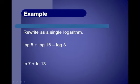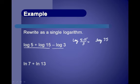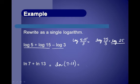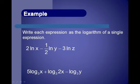Now let's go the other way — rewrite as a single log. For log(5) + log(15) − log(3): the plus means multiply, giving log(5 × 15) = log(75); the minus means divide by 3, giving log(75/3) = log(25). For ln(7) + ln(13): adding logs means finding the product, so that's ln(7 × 13) = ln(91).